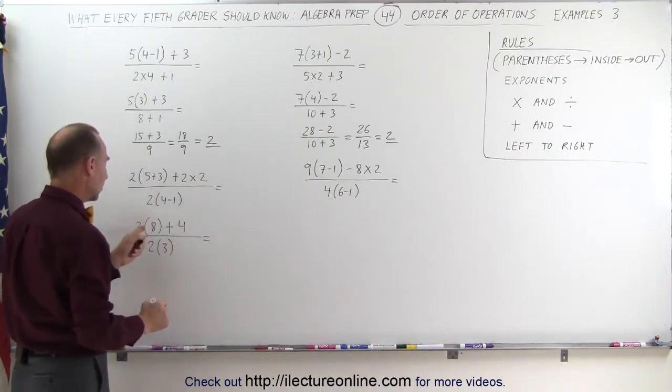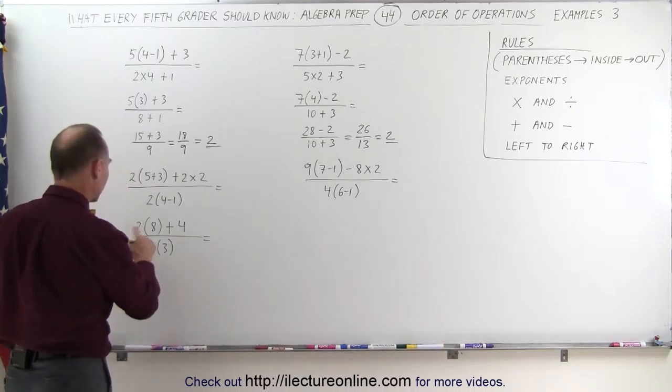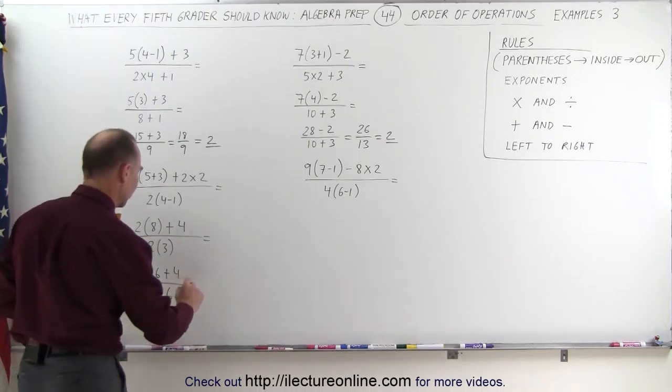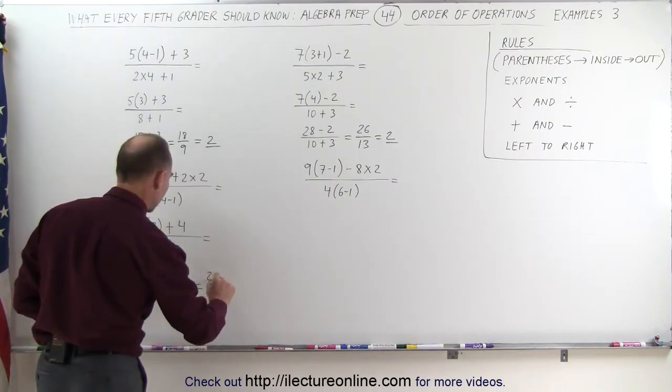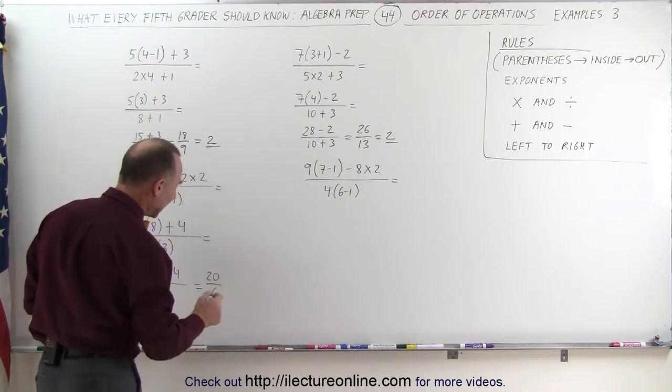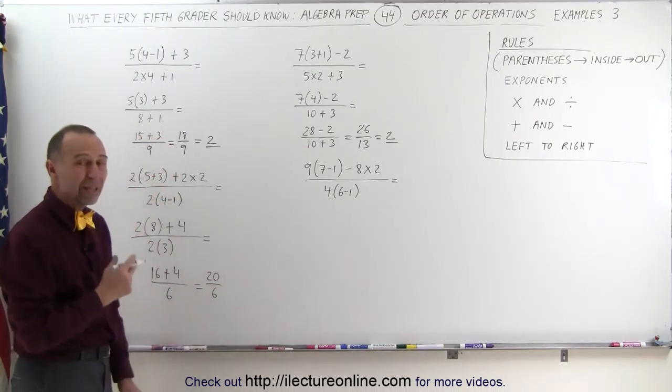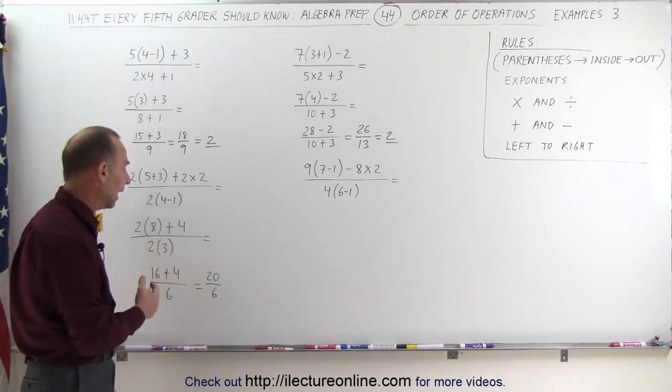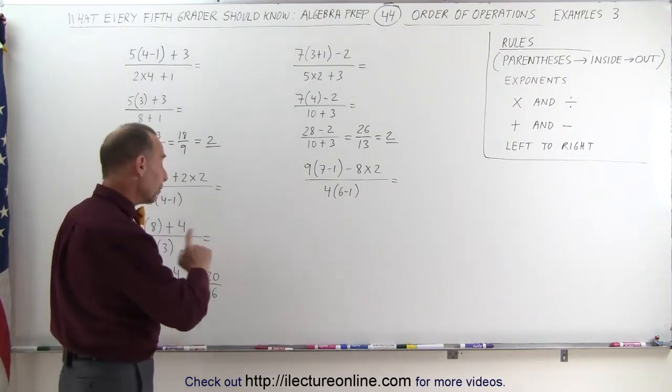Now we can do this multiplication here, we can do this multiplication there, 2 times 8, that's 16, plus 4, divided by 2 times 3, which is 6. And 16 plus 4, that is 20, divided by 6, and, well, 6 doesn't go evenly into 20, we can either leave it like that, or we can write it as a decimal.